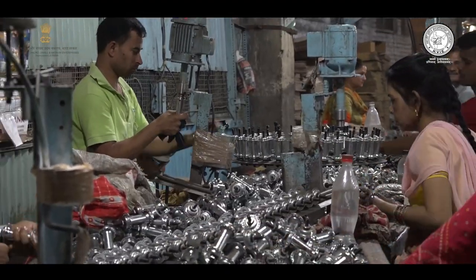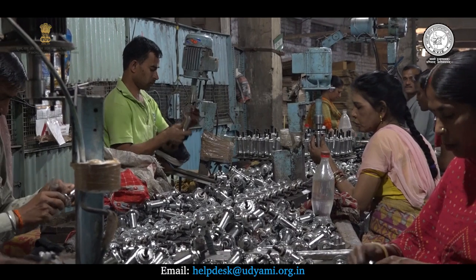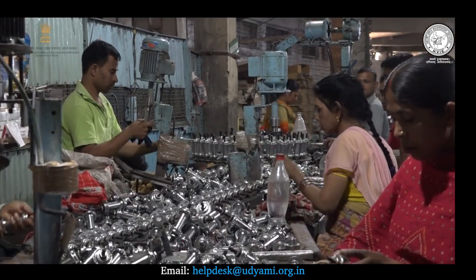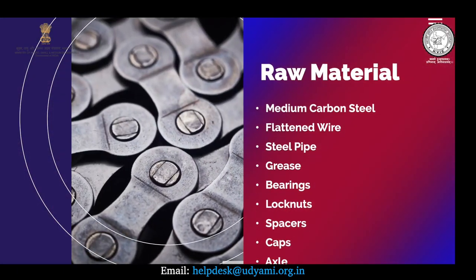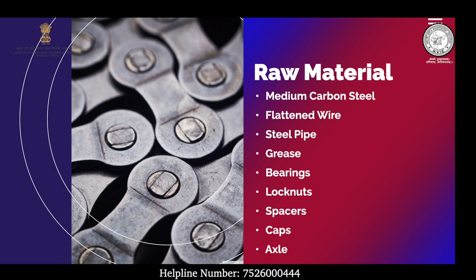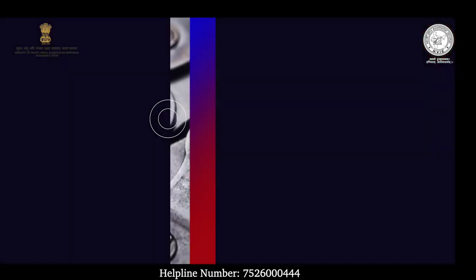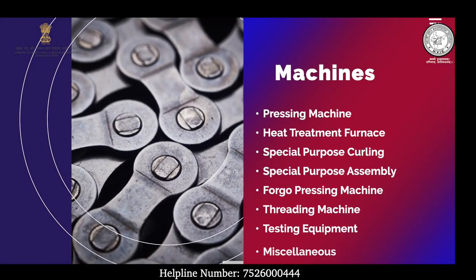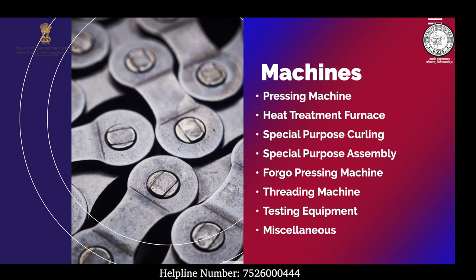Cycle chain और hub बनाने के लिए raw materials के तौर पर आपको medium carbon steel, flattened wire, steel pipe, grease, bearings, lock nuts, spacers, caps और axle की ज़रूरत होगी।